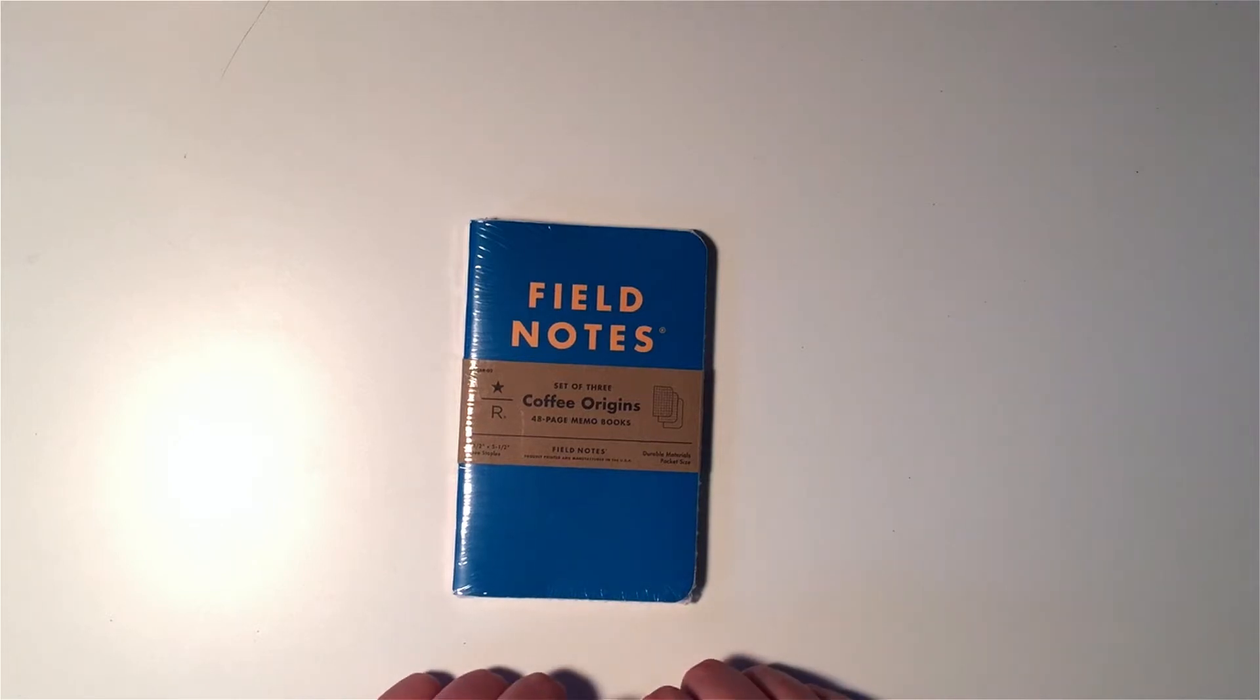I am here today with another Field Notes unboxing video. Today I have the Coffee Origins notebooks. These are regular size Field Notes. It's the second edition to be sold by the Starbucks Roastery in Seattle. I have a co-worker who went up there. Thank you, Julie, very much for picking these up for me.